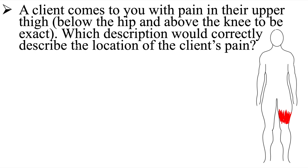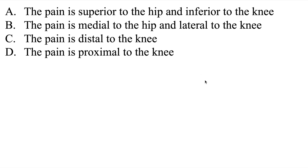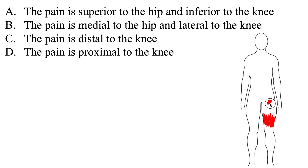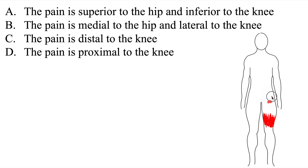Which description would correctly describe the location of the client's pain? Let's check out our answer choices. A says the pain is superior to the hip and inferior to the knee. Here's our hip — superior is in this direction — and here's our knee — inferior is in this direction. So A is not likely the answer. For B, the pain is medial to the hip and lateral to the knee. Medial is towards the midline, and lateral is toward the side. So B is also not likely the answer.